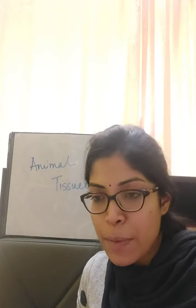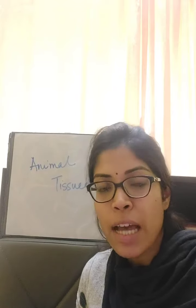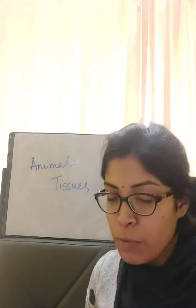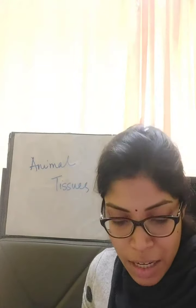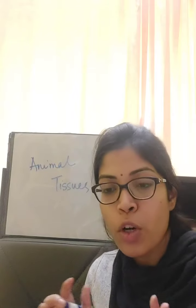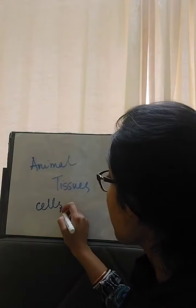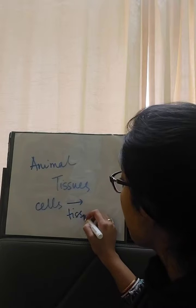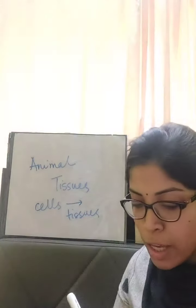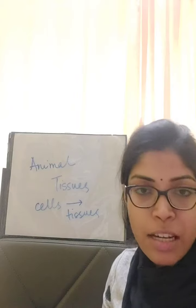There are two types of tissues: plant tissues and animal tissues. There is a separate chapter for plant tissues in your syllabus, which we will do later after we complete this chapter. So first we will start with animal tissues, and when we are done, we will move on to plant tissues. Many cells together form tissues.